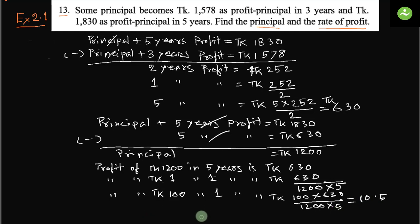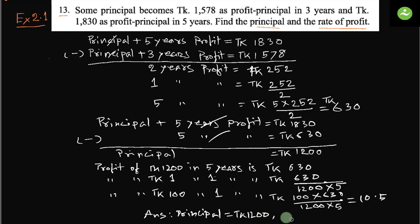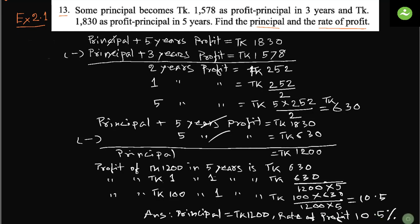Rate of profit equals 100 times 630 divided by 1200 times 5, which simplifies to 10.5. So the final answers are: principal equals taka 1200, and rate of profit equals 10.5 percent. Thank you very much.